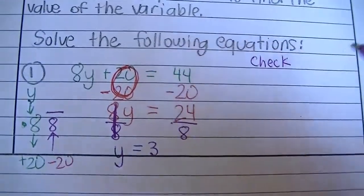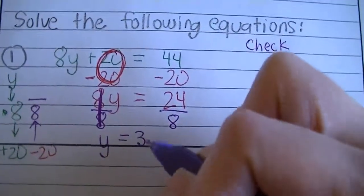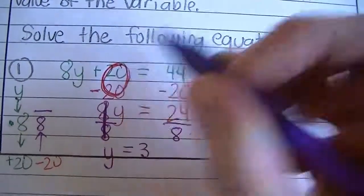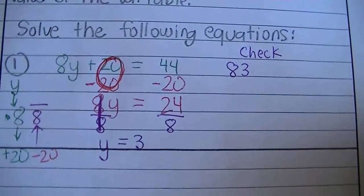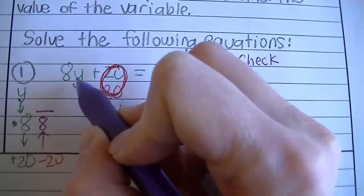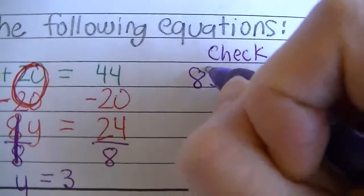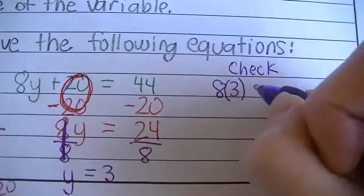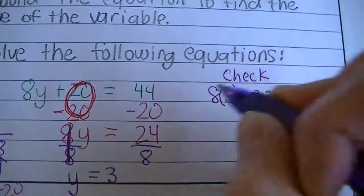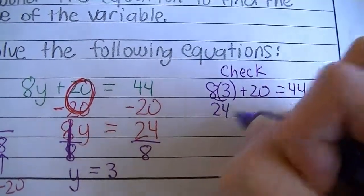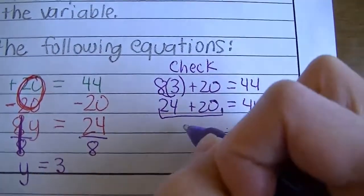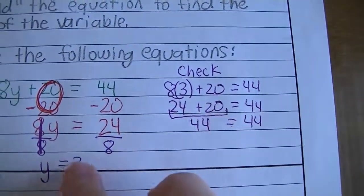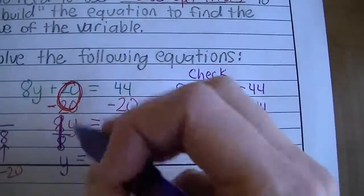However, we should check it to make sure it's correct — I want you to check it on every assessment. To check it, you write that original equation but instead of putting y, you substitute that 3 in. It kind of looks silly as 83, but recall that this means multiply, so it's really 8 times 3. Using parentheses, that also means multiply. Then we add 20, and that should equal 44. 8 times 3 is 24, add 20, and that should equal 44. 24 plus 20 is 44. Both sides of the equation are true, so we know that's the answer — circle it.